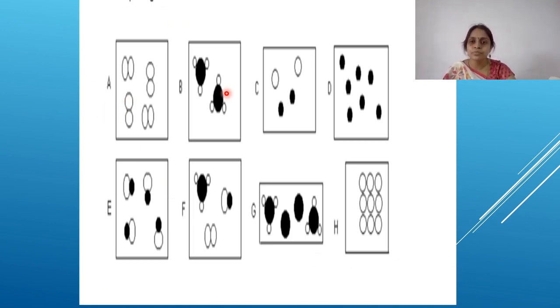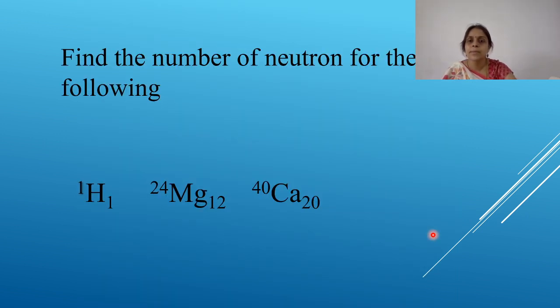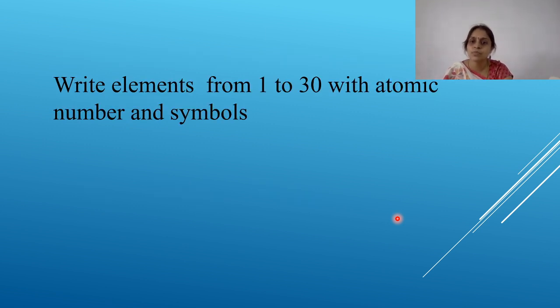This is an assignment for you. There's eight boxes from A to H. Just take your time and identify which can be element, which can be molecule, which is a compound one. And find out if there is a mixture also. Basic concepts what you are studying. Start applying for this. Next, find the number of neutrons in the following. Above these three, you have to find the number of neutrons. Then write the elements from 1 to 30 with their atomic numbers and symbols. So write down all in your books, notebooks or in a sheet of paper. So be ready with this. These are all the basic concepts which are required for you for the further classes.